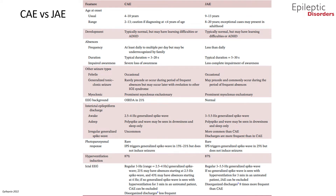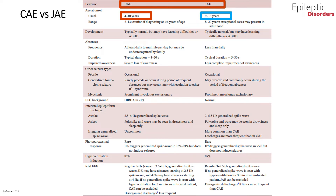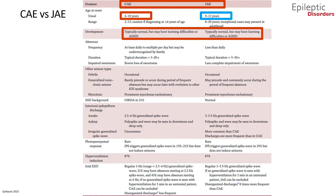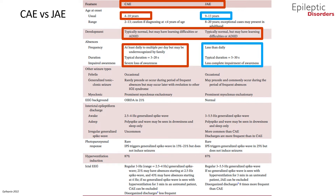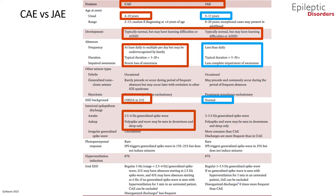This table compares childhood absence epilepsy with juvenile absence epilepsy. The usual age of onset for CAE is 4 to 10 years, compared to 9 to 13 years for JAE. Typical development for both syndromes is normal. Absence seizures in JAE tend to have longer duration and less severe symptoms than in CAE. OIRDA, occipital intermittent rhythmic delta activity, can be seen in 21% of CAE patients. In the awake state, CAE shows 2.5 to 4 Hz generalized spike-wave activity, while JAE shows 3 to 5.5 Hz.